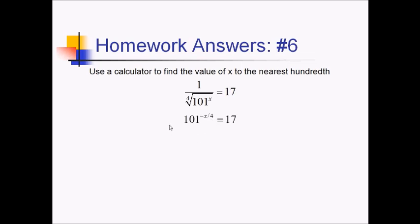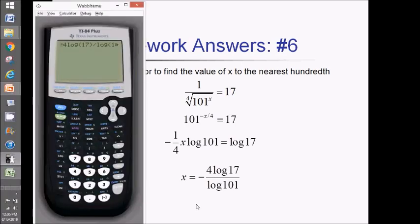We'll have negative x over 4 log 101 on the left and log 17 on the right. Rearranging things now, I'm going to multiply both sides by negative 4 and divide by log of 101. So we'll have negative 4 log of 17, all of that over log of 101. And when I enter this in the calculator, I don't have to worry about parentheses since I'm multiplying multiple things in the numerator, the calculator will just take care of that on its own. So let's go ahead and do that. So I've got negative 4 log of 17 divided by log of 101, which comes out to negative 2.46.